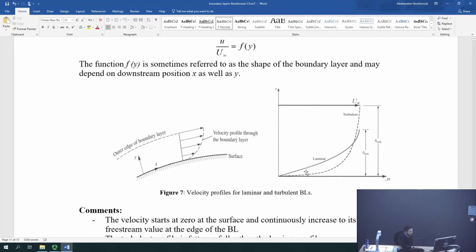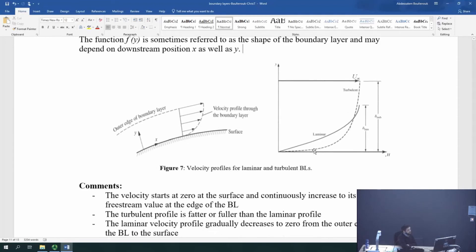So, the laminar boundary layer is the thick line, and the turbulent one is the dashed line. And immediately, you guys see that the boundary layer thickness for the laminar boundary layer is smaller than that of the turbulent. So, turbulent boundary layers are always thicker than the laminar ones. And also, the way they change.